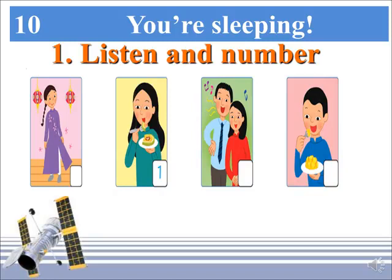Now let's listen and number. Listening 114. Dear Kim, now I have the photos of our Tet holiday. 1. In this picture, my Aunt Tam is eating the banh chung — she likes it very much. 2. Here are my mom and dad, they are singing, they are very happy. 3. This is me, I am wearing my new purple ao dai. 4. Here is my brother, he is eating mangoes.